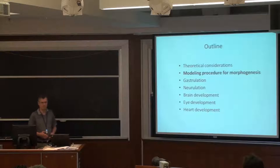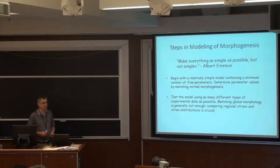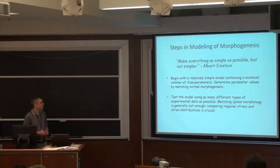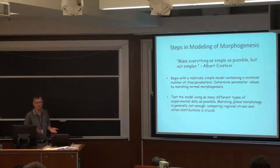Modeling of biological systems is something of an art. In my view, it's best to follow the advice of Albert Einstein: make everything as simple as possible, but not simpler. We begin with a relatively simple model that contains a minimum number of free parameters, then determine the parameter values by matching normal morphogenesis. This doesn't mean you start with the most complex realistic problem — you start with something reasonable and include the least amount of information you think you can get away with.